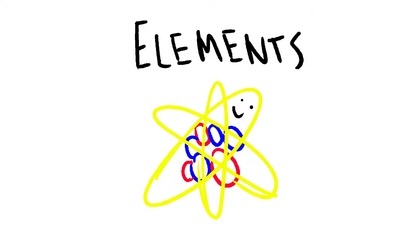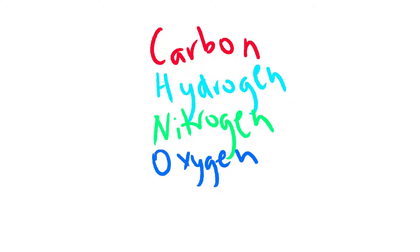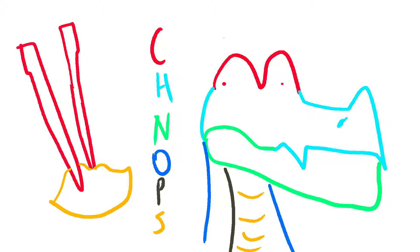All life is made up of elements. The six elements required by all organisms are carbon, hydrogen, nitrogen, oxygen, phosphorus, and sulfur. Remember schnapps or schnappsticks, up to you.